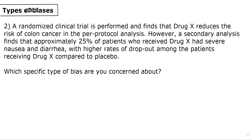So in this case, a randomized clinical trial is performed and finds that drug X reduces the risk of colon cancer in the per-protocol analysis. However, a secondary analysis finds that approximately 25% of patients who received drug X had severe nausea and diarrhea, with higher rates of dropout among the patients receiving drug X compared to placebo. And we're asked which specific type of bias are you concerned about?